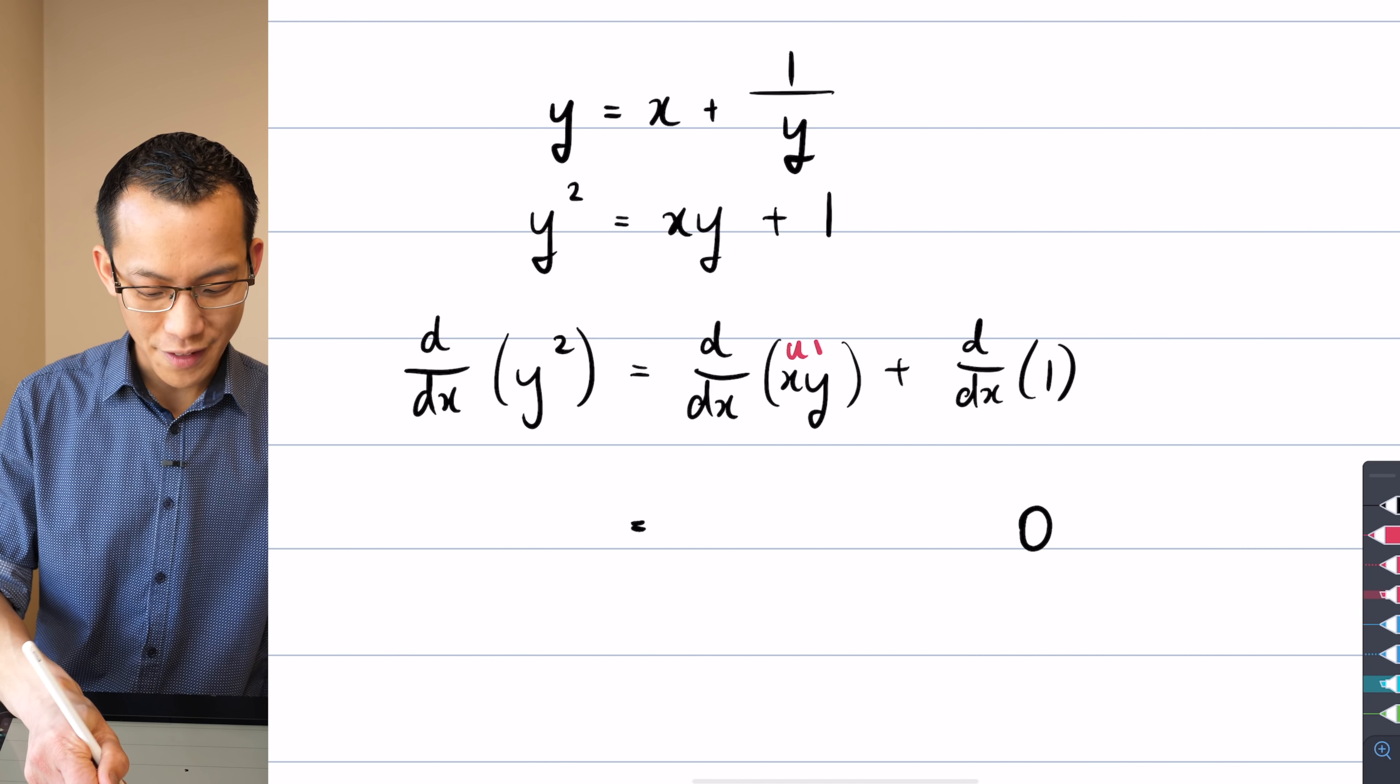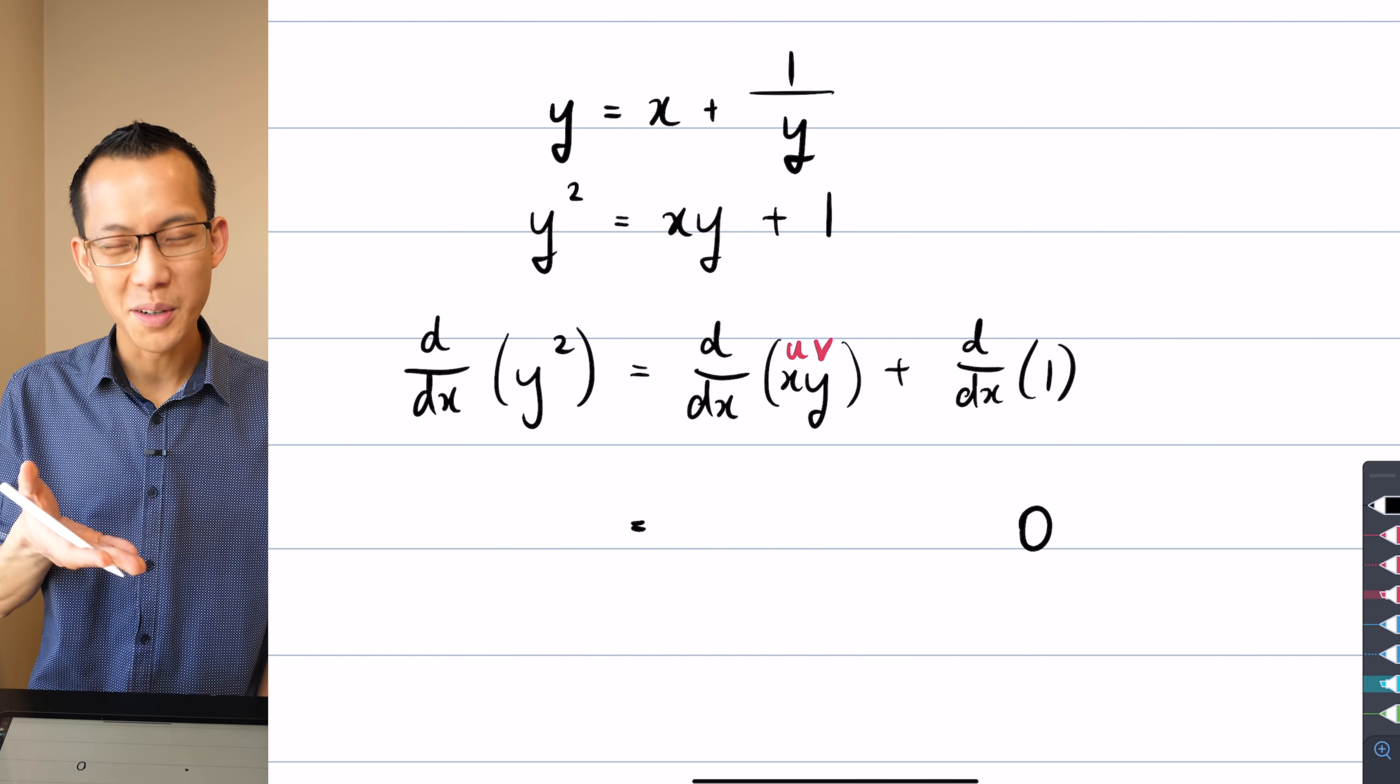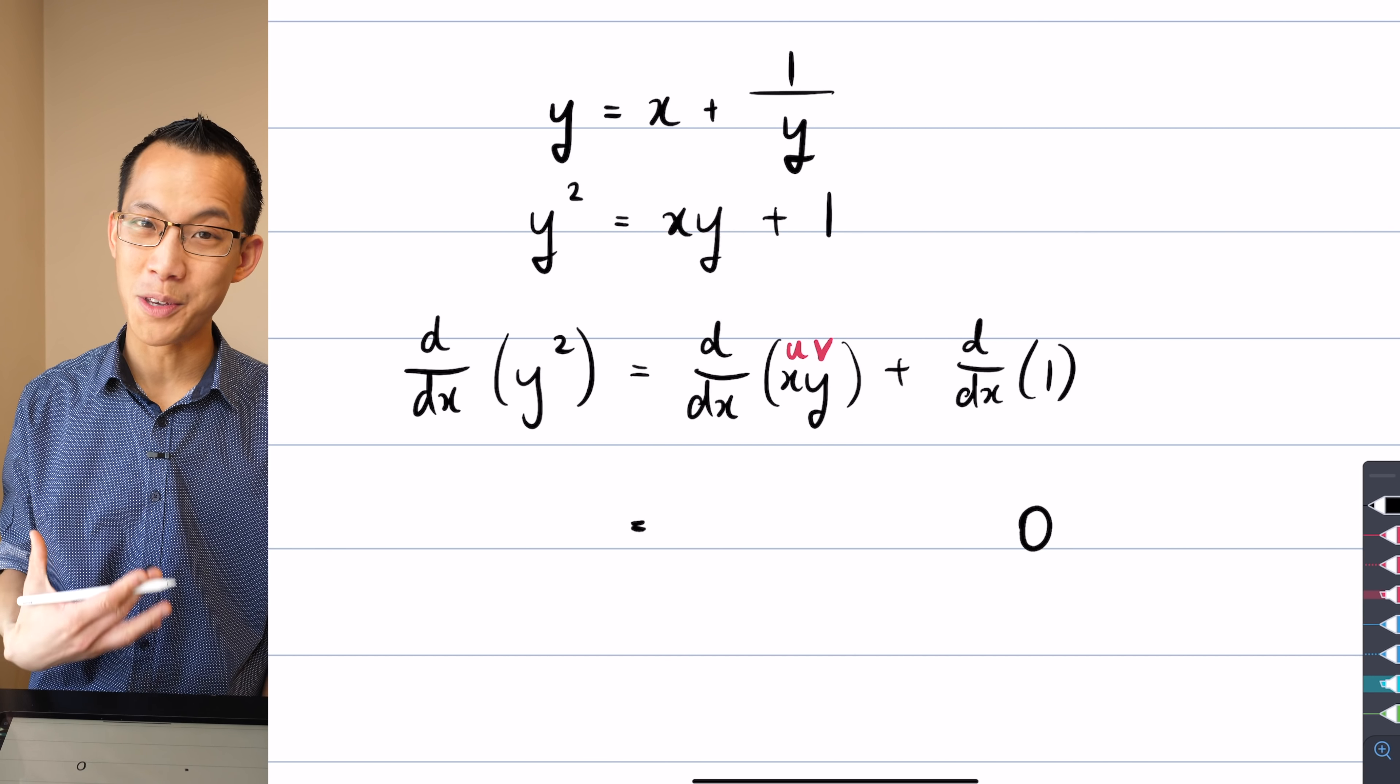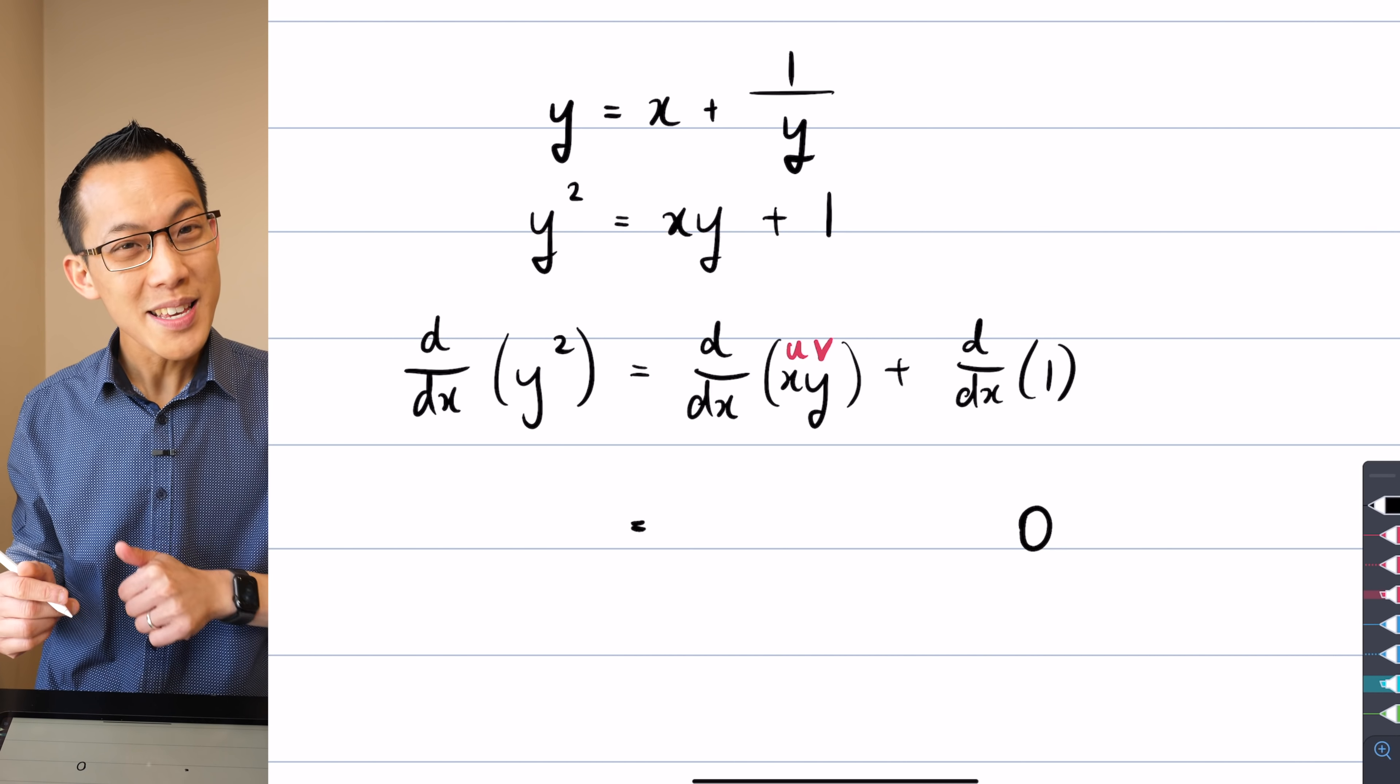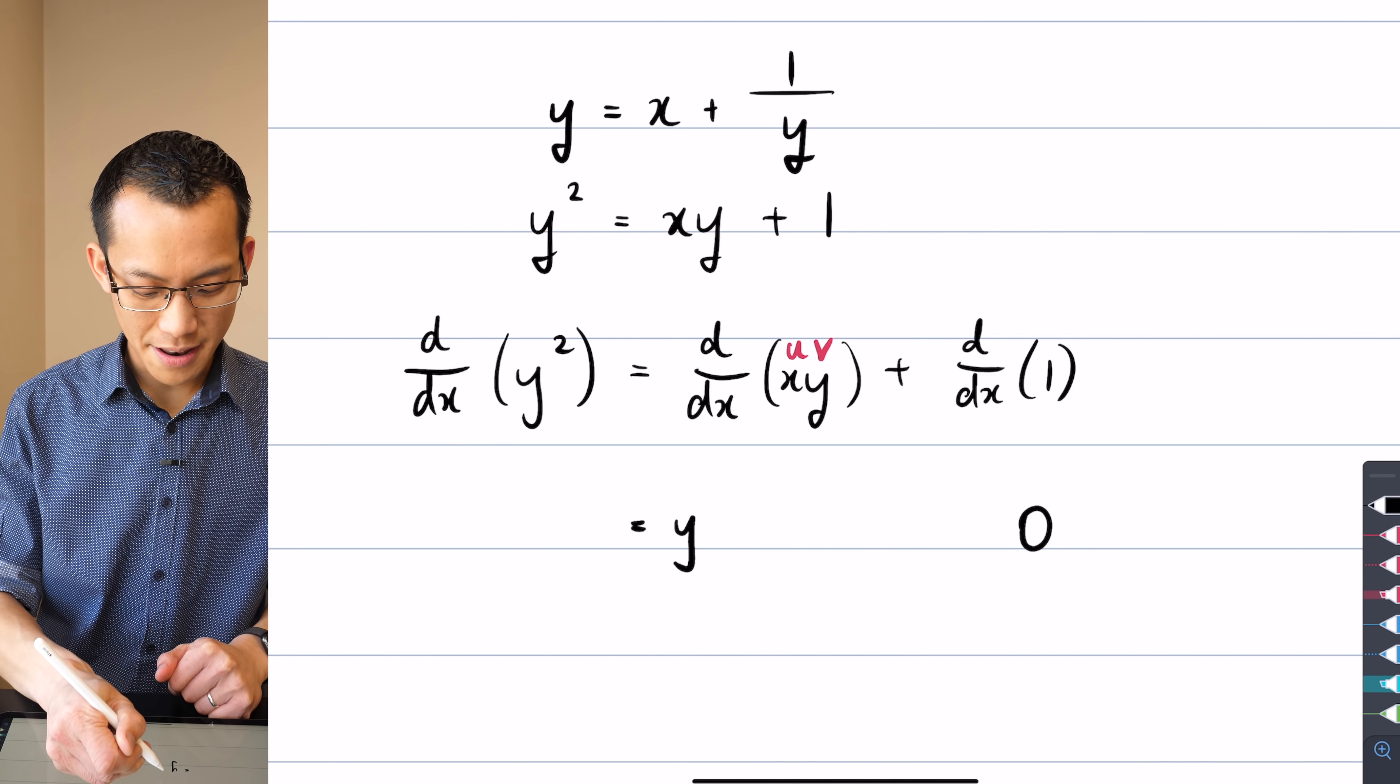What's the derivative of a constant with respect to anything? Well, it's just going to be zero. No big deal there. Now have a look at this bit. You're differentiating x times y. This is a product, isn't it? If there was a u and a v here, you wouldn't even bat an eyelid. You would say, oh, this is just the product rule. It's the fact that there's an x and a y, which is just not the letters we're used to seeing, that kind of fizzles our brain out a little bit.